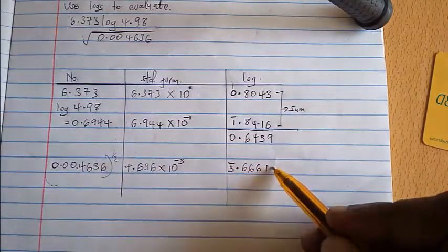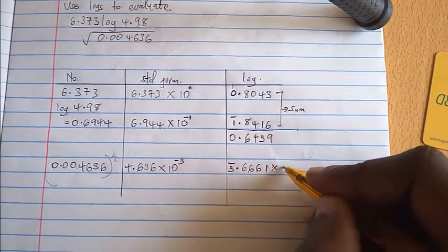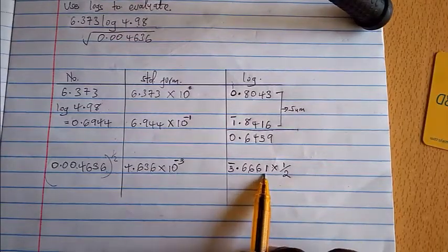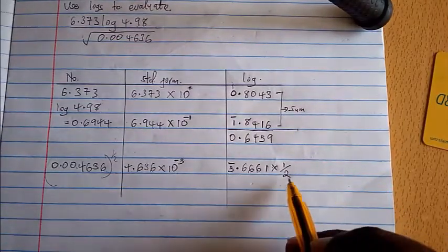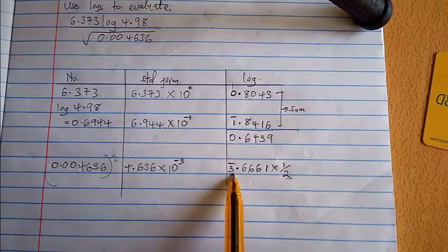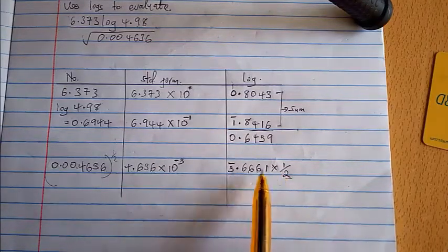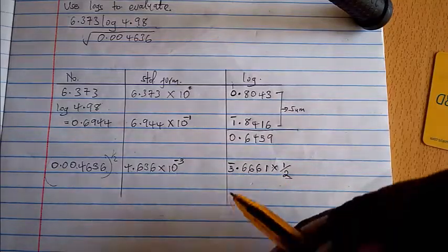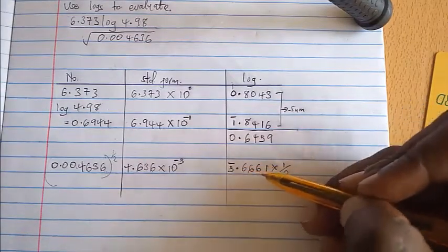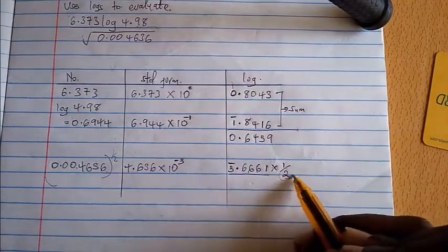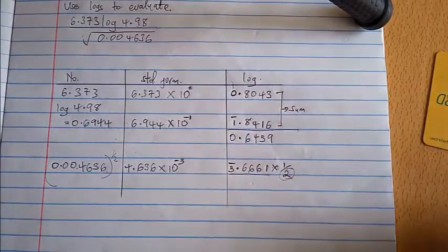From here remember there is a square root sign, it means we need to multiply this by a half. So you're multiplying this log by a half. Now that takes us to another operation when we notice that the denominator and the whole number here cannot directly divide each other, we split this number into two parts.